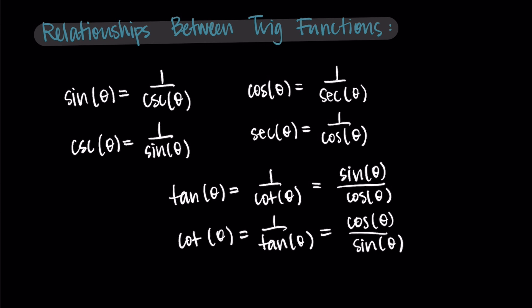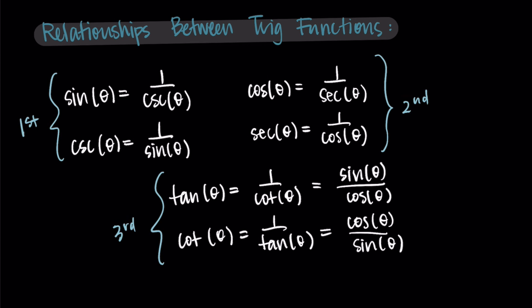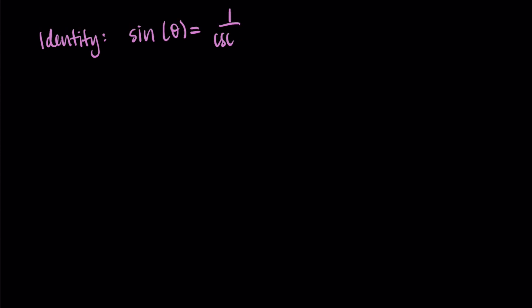I'll spend the rest of this video explaining the more rigorous proofs for why these are the way they are. But if you're not interested in that, that's okay too. We're going to start with sine and cosecant, then cosine and secant, and third the tangent and cotangent identities. So let's start with sine of theta equals one over cosecant of theta. To prove this is true, I'm going to start with one over cosecant of theta and show that it's equal to sine.